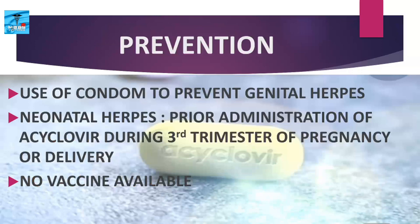Neonatal herpes can be prevented by prior administration of acyclovir to mothers during the third trimester of pregnancy, or by delivery via elective caesarean section. Currently, no vaccine is licensed.